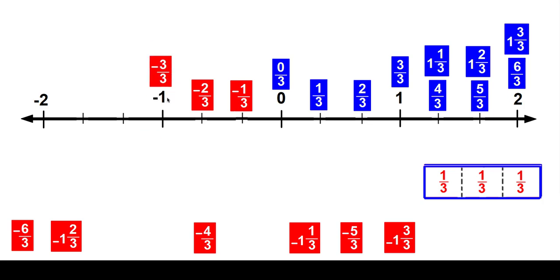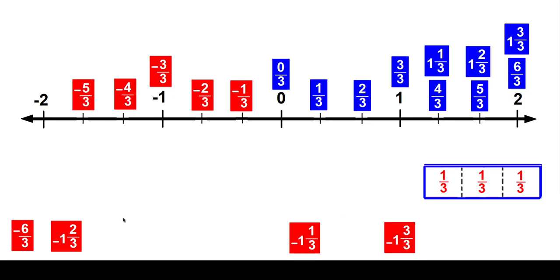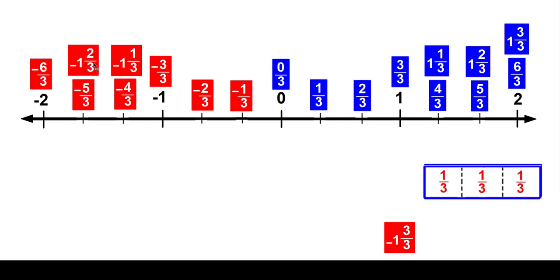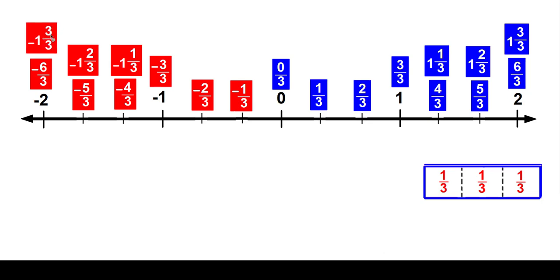And this here would be negative three thirds, and that would be negative one. This would be negative four thirds and negative five thirds. And then negative six thirds is the exact same thing as saying negative two. These are improper fractions. So if this is negative one, this would be negative one and one third, and this would be negative one and two thirds. And this could be written as negative one and three thirds — well, three thirds is one, so negative one plus negative one is negative two.